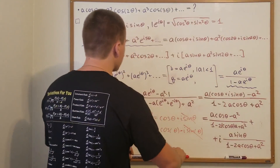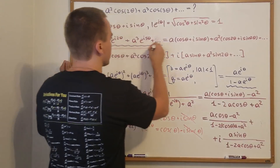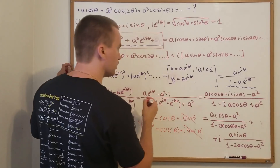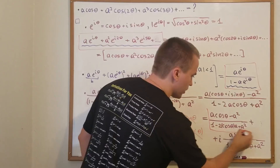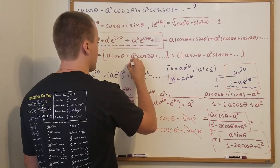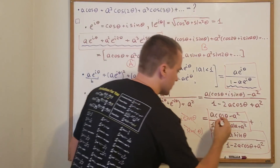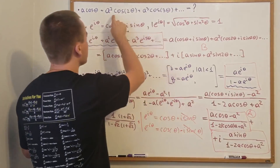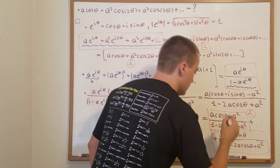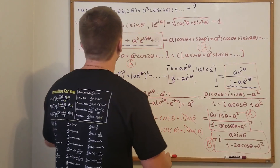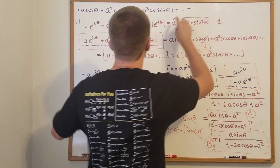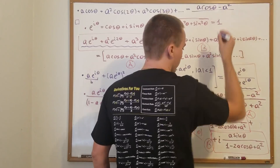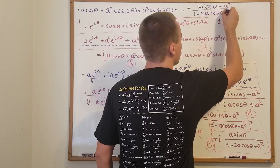We are basically done. This sum equals the real part plus the imaginary part. The real part is (A·cos θ − A²) / (1 − 2A·cos θ + A²), which is the answer for our original cosine series. The imaginary part, A·sin θ / (1 − 2A·cos θ + A²), gives us — as a bonus — the sum of the corresponding sine series. So the final answer for our series is (A·cos θ − A²) / (1 − 2A·cos θ + A²).